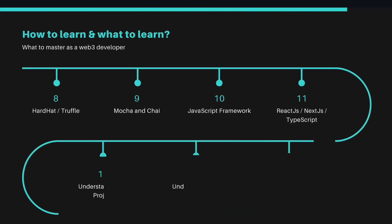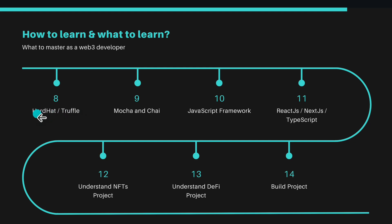The next step is to learn development frameworks — these are very important for testing and deploying smart contracts. After the crypto wallet, start learning Hardhat and Truffle; both are used for testing and development of contracts. I mostly prefer Hardhat because it has an easy-to-use interface and is an amazing framework — you can pick either one. I have a complete playlist on Hardhat. It will take only one day if you give five hours. Learn how Chai and Mocha libraries work for testing, how to deploy a contract, configure different networks, and manage deployment.